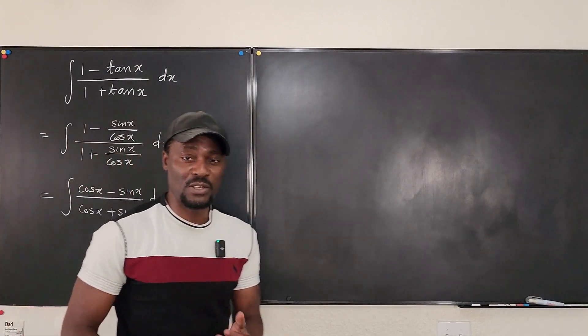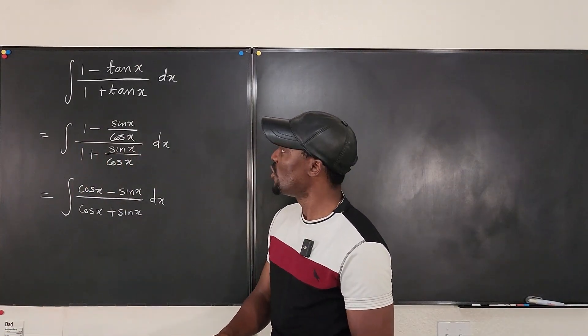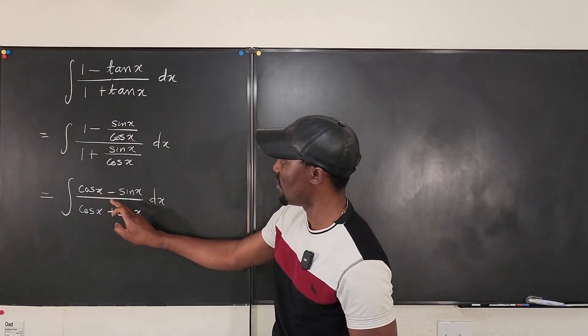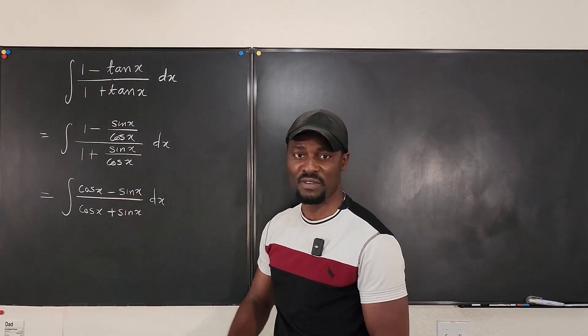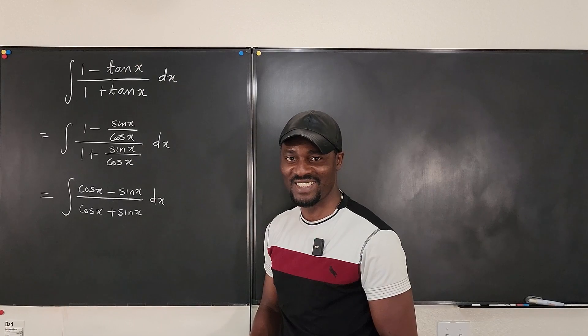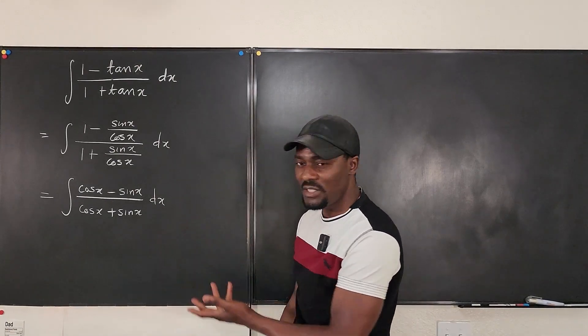Actually, if you remember your trig days, this was one of those identities where you were supposed to prove that this is equal to this. And all you had to do was divide each term by cosine x. Okay. Now, is this easier?